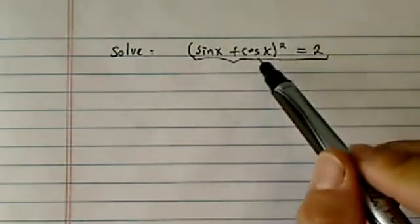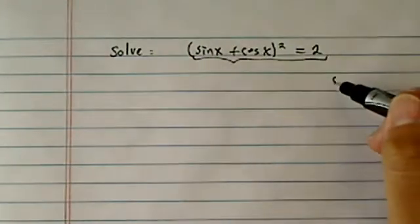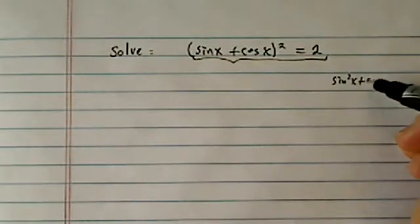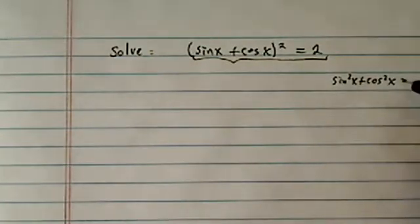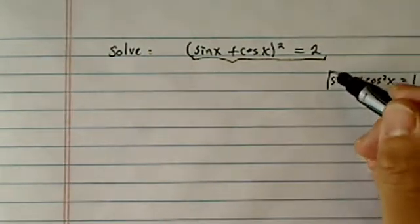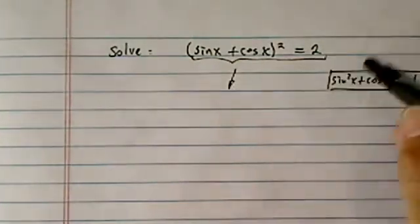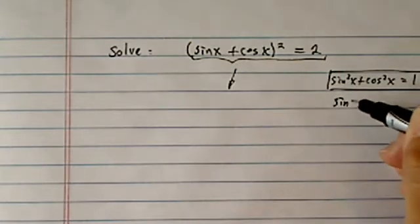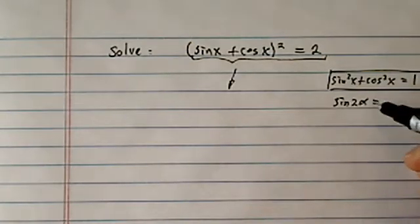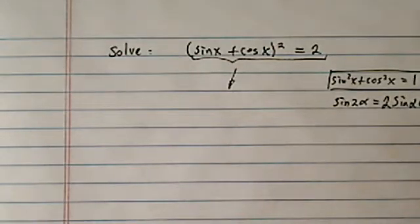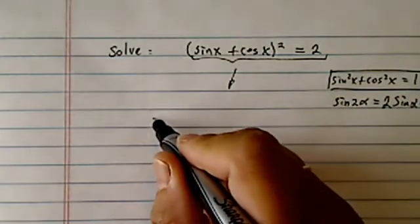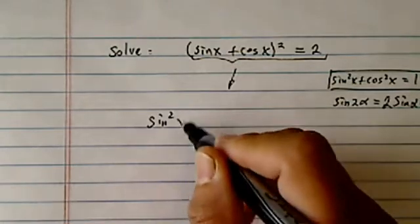If we expand the left-hand side, we can see that we can use this very nice identity that sine squared plus cosine squared equal to 1. And then from there, we're going to use another trick. It says sine of 2 alpha is equal to twice of sine alpha cosine alpha. If you can't see those in your head, let's get started.